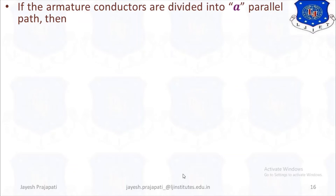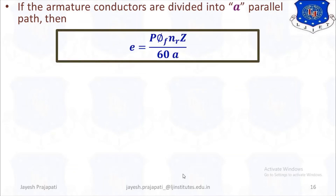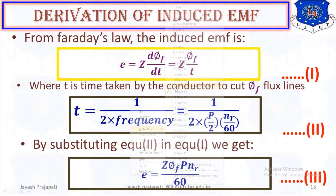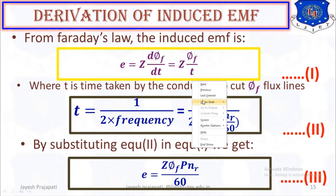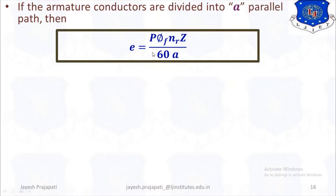If the armature conductors are divided into A parallel paths, then the equation becomes E equals P·Φf·NR·Z divided by 60A. We divide equation 3 by 60A to get this result, taken as equation number 4.